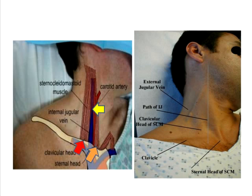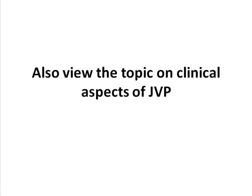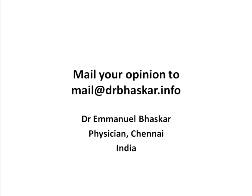The external jugular vein shown on the right side of the diagram is more superficial, but it is not reliable to appreciate the waveforms in this vein for reasons already explained. Do view the topic on clinical aspects of JVP to translate the knowledge gained on the anatomical aspect for proper understanding and application at the bedside. Thank you.